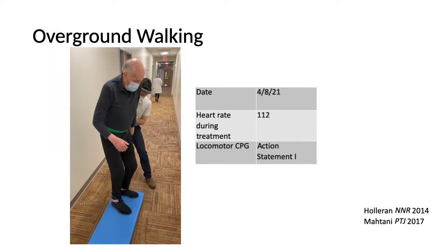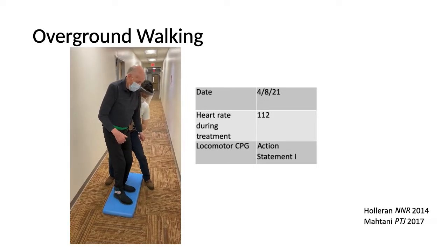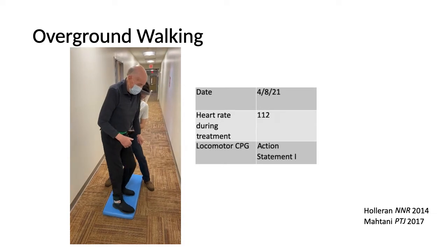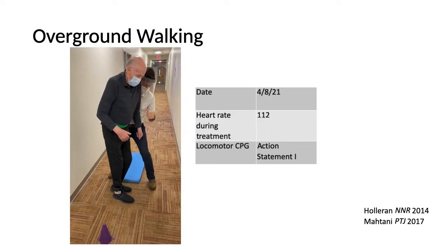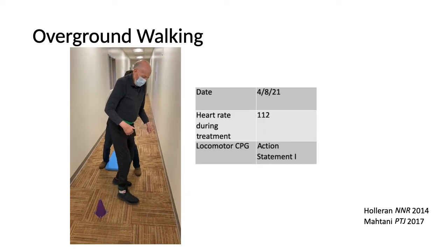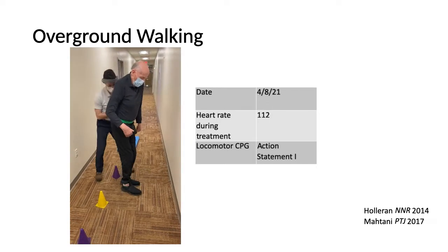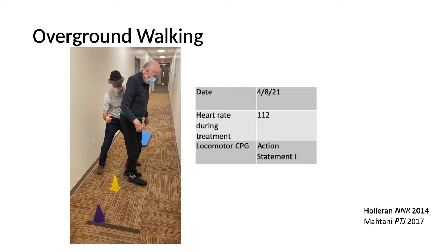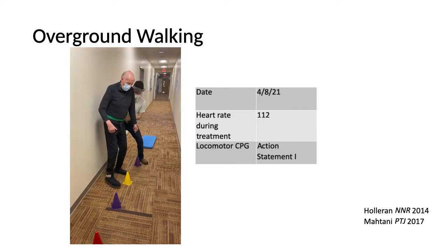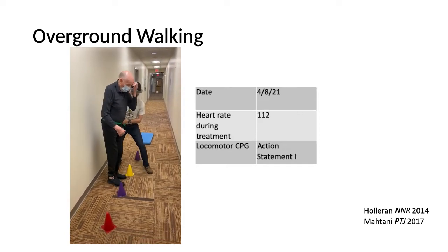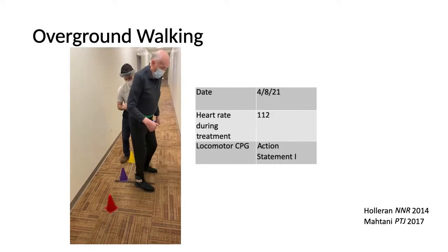This next video is about a month later, on April 8th, 2021. His heart rate during this treatment was recorded at 112 beats per minute, again supported by action statement number one of the locomotor CPG. The patient is engaged here by challenging his frontal and sagittal stability with resistance applied by a theraband at his pelvis and an ankle weight on his hemiparetic right leg. This is supported by Halloran highlighting the importance of challenging biomechanical subcomponents of gait and Mitanni highlighting the effect of challenging frontal and sagittal kinematics post-stroke.